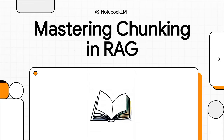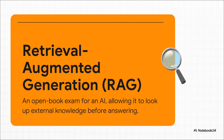Welcome to The Explainer. Today we're diving deep into something that's absolutely critical for making AI smarter, but it's often hidden behind the scenes. We're talking about advanced chunking — it really is the secret sauce for a powerful technique called retrieval augmented generation. And getting it right is a total game changer.